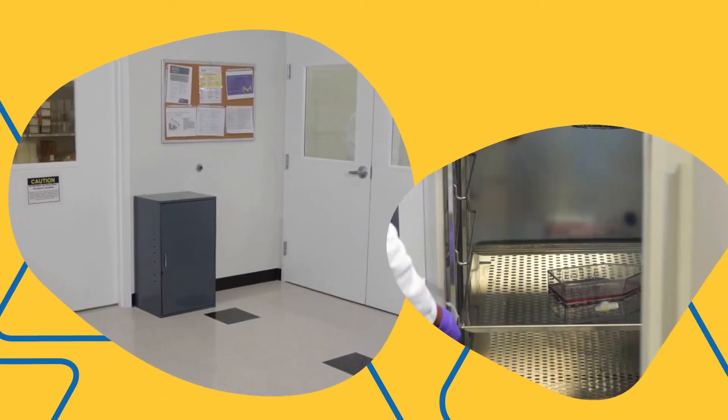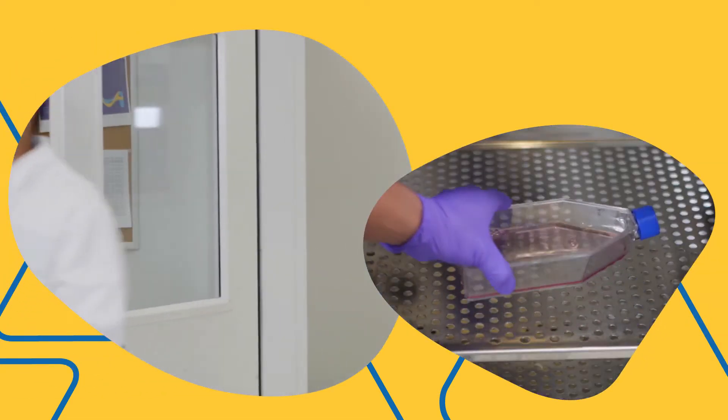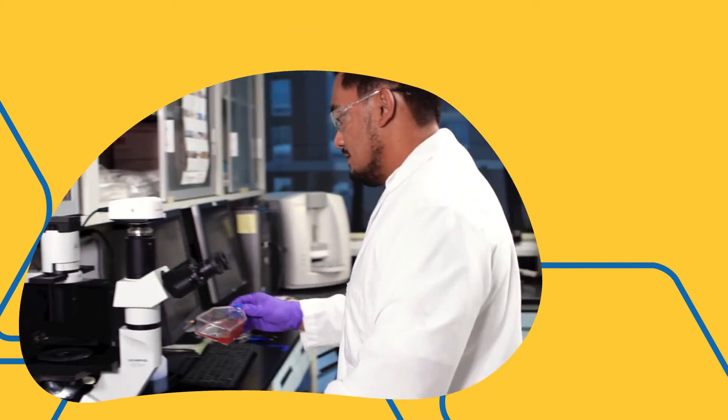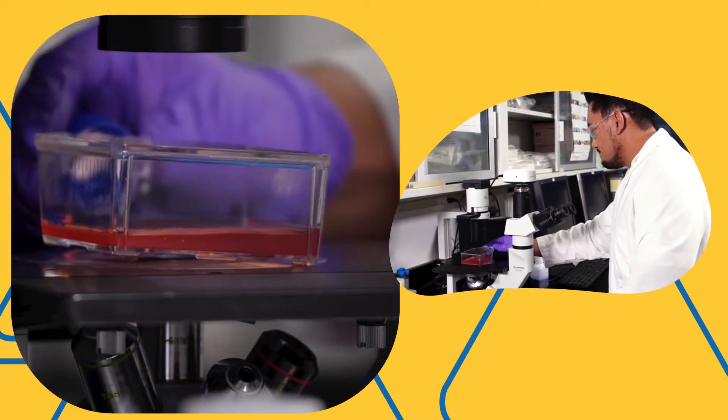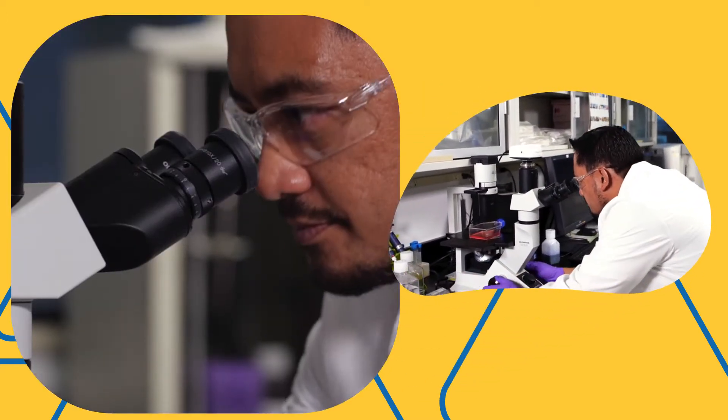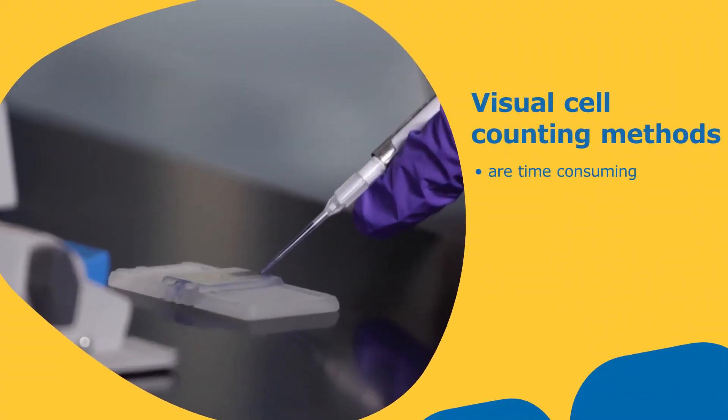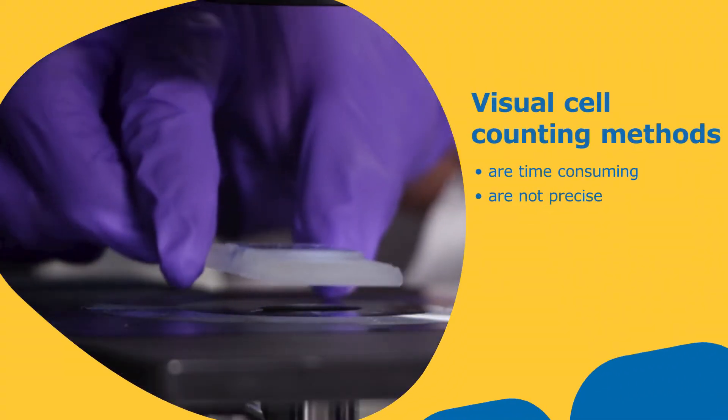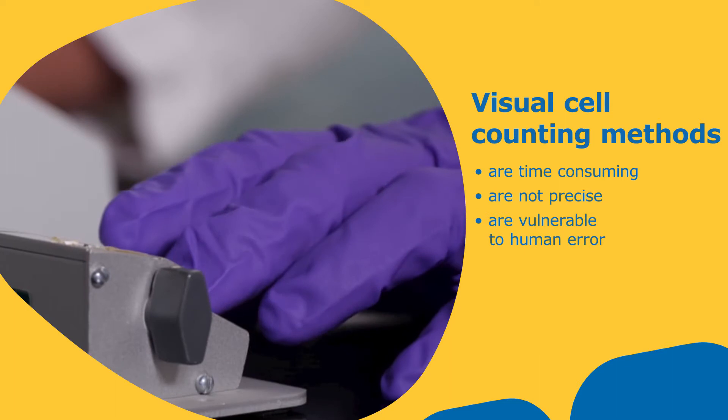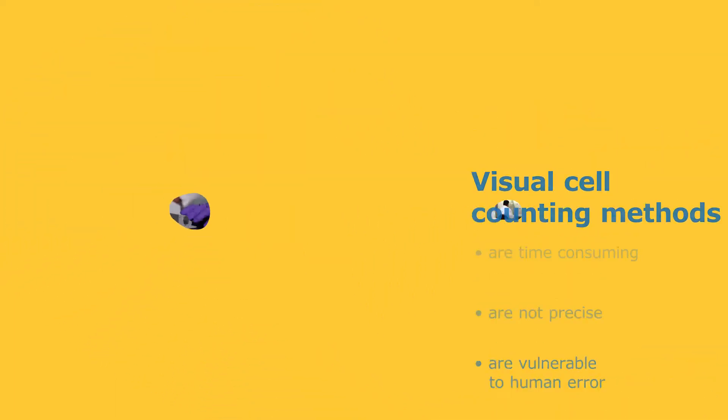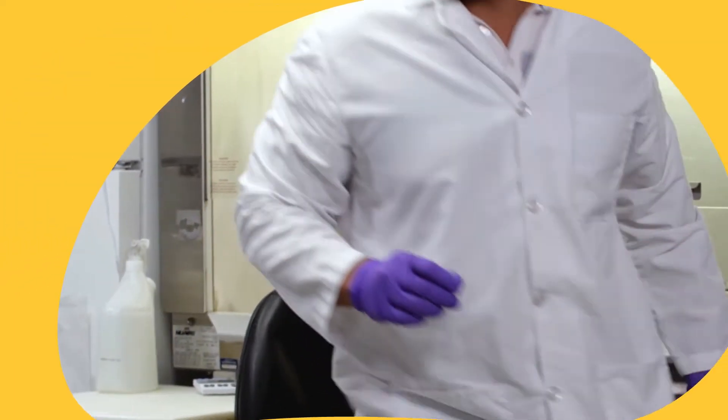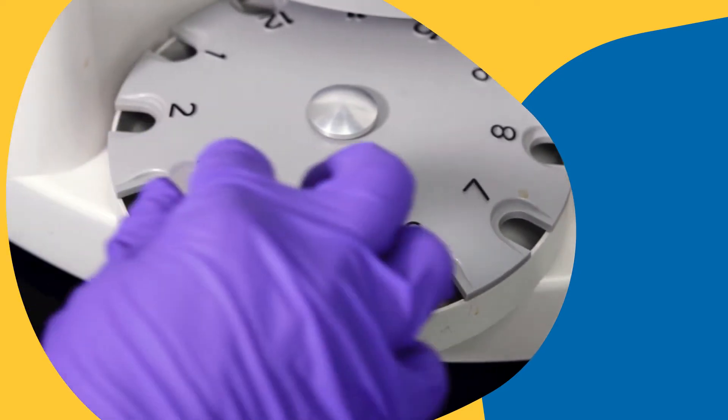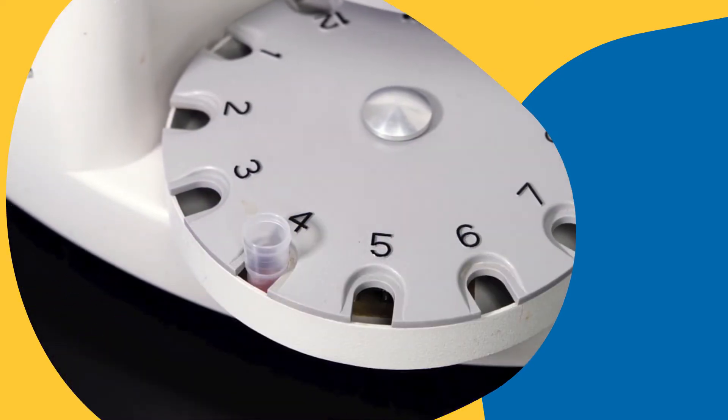You may have counted cells the same way for a long time without giving much thought to the accuracy of your method or how much time it takes. Visual methods are time-consuming, subjective, and at the highest risk for counting and calculation errors. Bulky vision-based automated counters are often large, costly instruments that require special reagents and supplies.